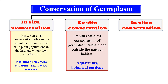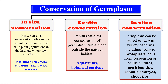When plants are conserved outside their natural habitat, this includes ex-situ conservation and in vitro conservation. In vitro conservation includes the preservation of germplasm in the form of isolated protoplasts, cells, seeds, meristem tips, somatic embryos, etc. When the germplasm is stored in isolated form in the lab, that is known as in vitro conservation.